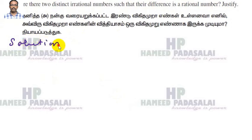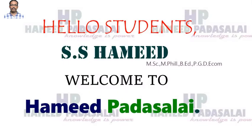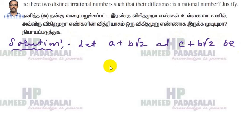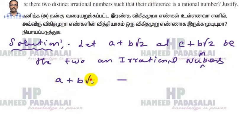First, we are going to write the solution. Two distinct irrational numbers are written. Let a plus b root 2 and c plus b root 2 be two irrational numbers. The difference is a plus b root 2, minus c plus b root 2.